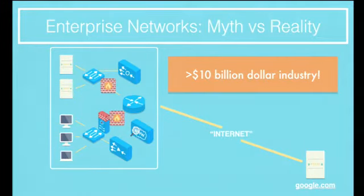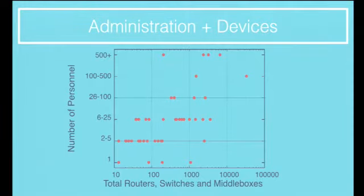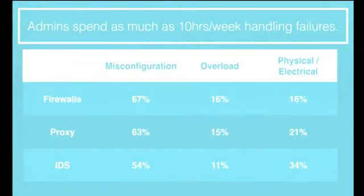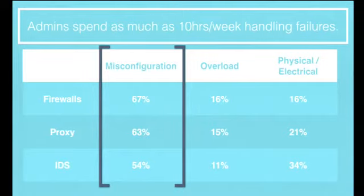Middlebox hardware sales are a $10 billion industry, but hardware costs alone aren't the only cost of deployment. Here's a scatter plot with the number of devices on the x-axis and the number of administrators managing them on the y-axis — this goes up to hundreds of individuals. So these are not only expensive devices, but the cost to manage them is also high. Some administrators report spending as much as 10 hours a week dealing with failures, and overwhelmingly the majority spoke of misconfiguration as their most common cause of downtime. This speaks to the complexity that comes with middlebox heterogeneity — there are a lot of devices, each with their own expertise required, and it's simply very easy to get things wrong.